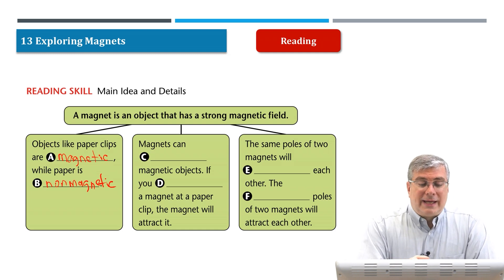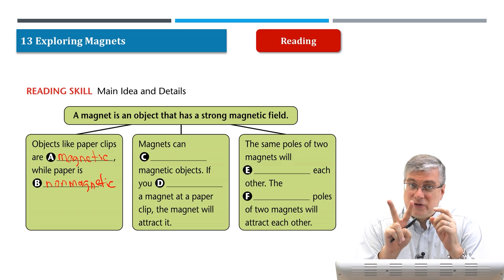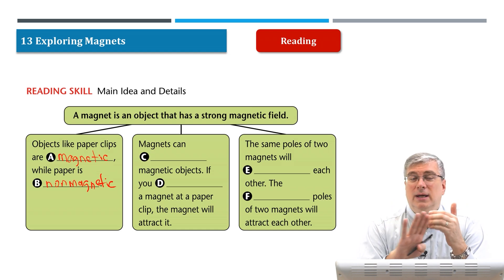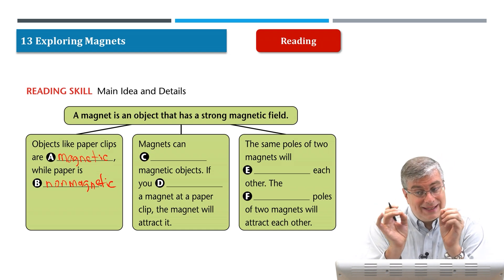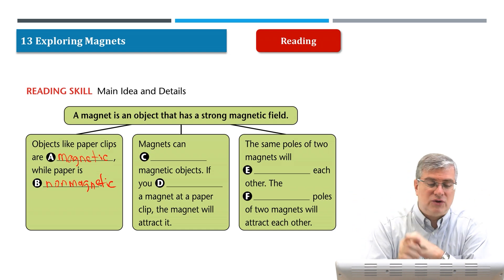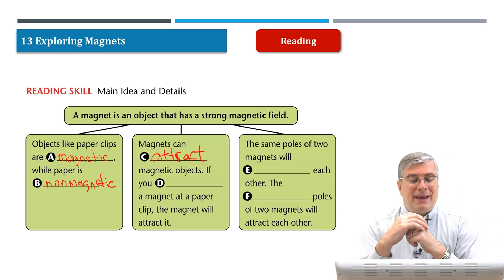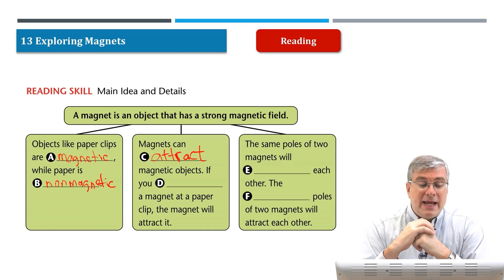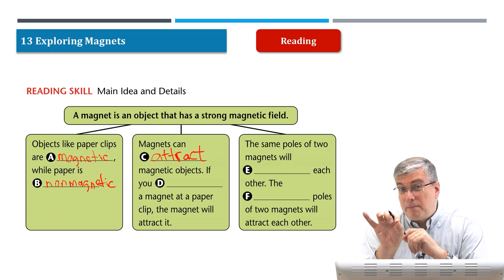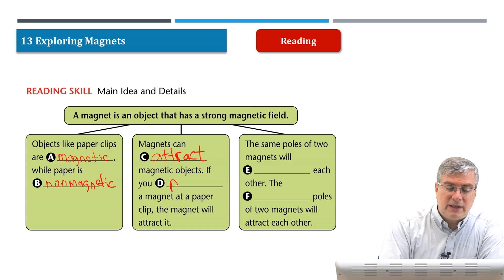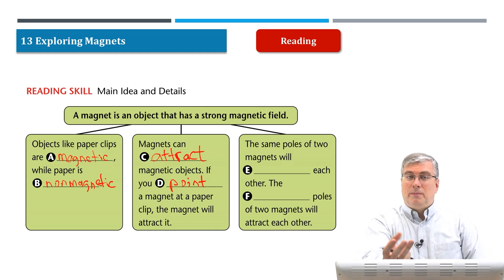What can magnets do? Magnets can attract magnetic objects. We talked about the forces of the magnetic field — there are two main forces: attraction and repulsion. If you have a magnetic object next to a magnet, they attract each other. So magnets can attract magnetic objects. If you point a magnet at a paper clip, the magnet will attract it — it will make the paper clip come towards it. The magnet has a north and south pole, so you have to point the magnet in the right direction at the paper clip.